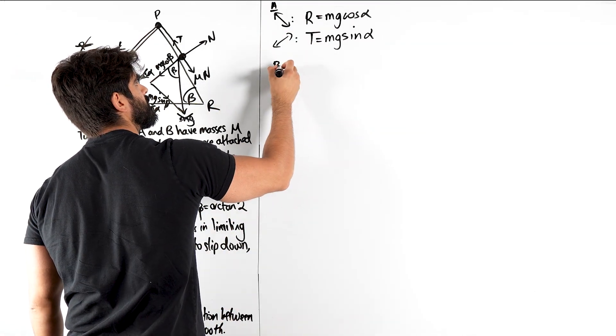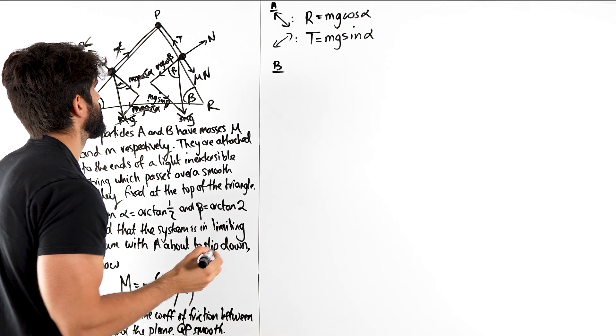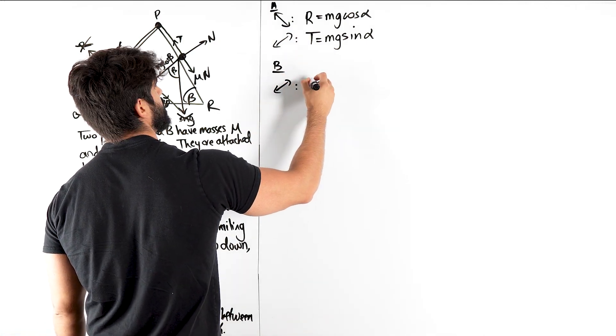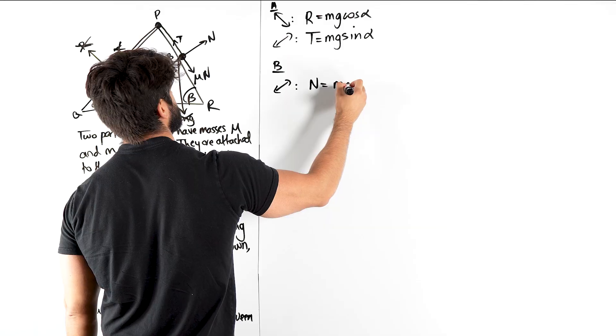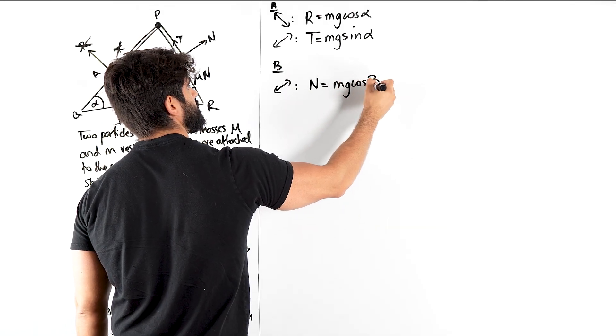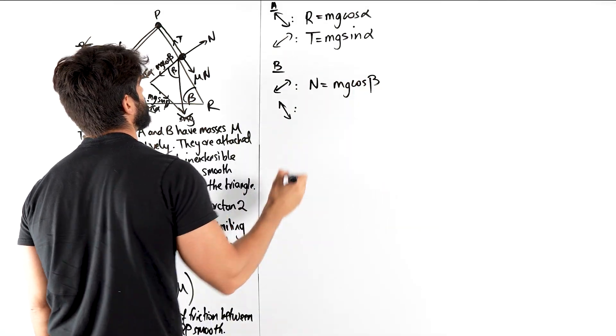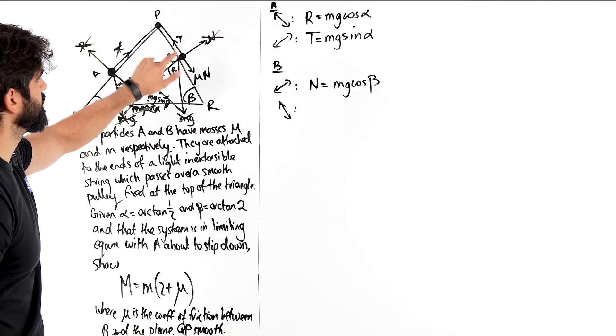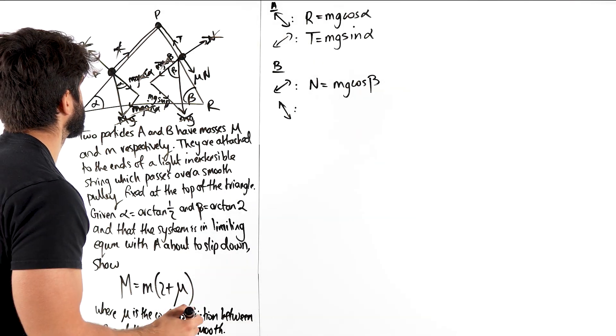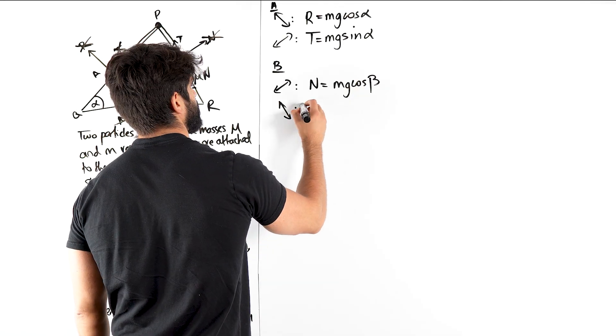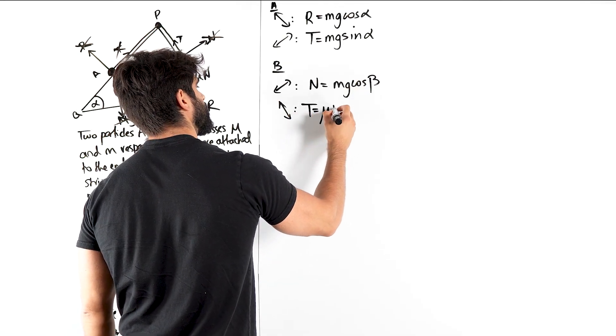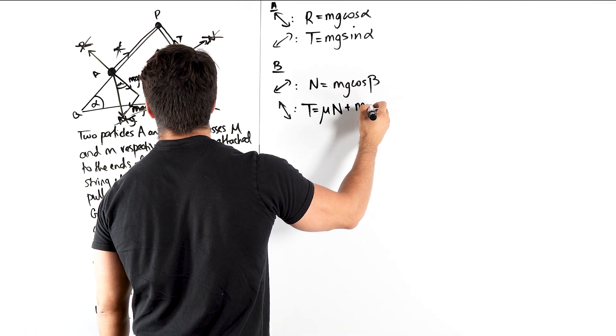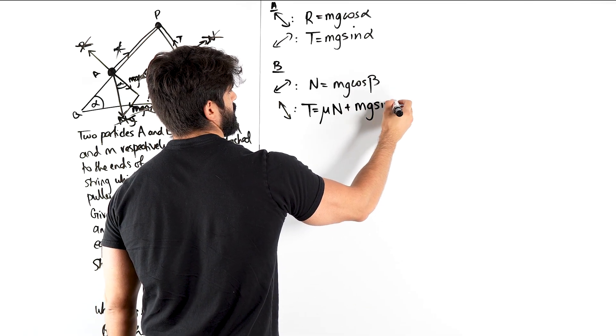For B, we have N equals MG cos beta. Then up the hill, down the hill for B, T is in equilibrium, so T equals mu N plus MG sin beta. So we have T is mu N plus MG sin beta.